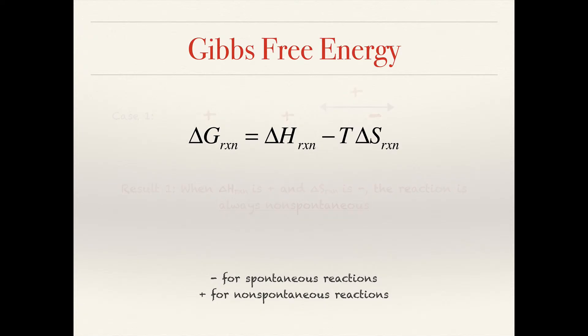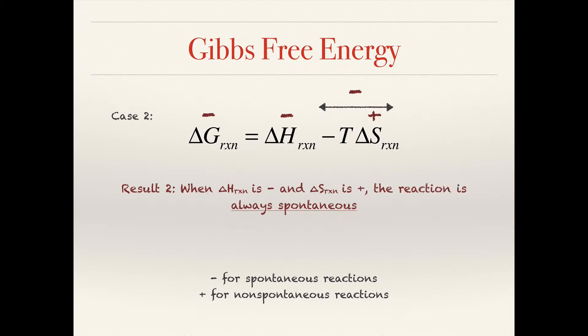In case two, suppose we have an exothermic reaction and a positive value for ΔS. The minus TΔS term will be negative, and two negatives added together will give us a negative value for ΔG, regardless of the temperature. So when we have an exothermic reaction and a positive value for ΔS, the reaction is always going to be spontaneous.